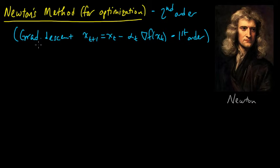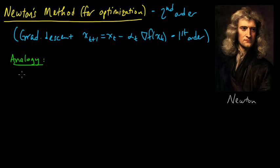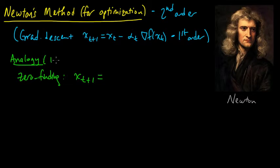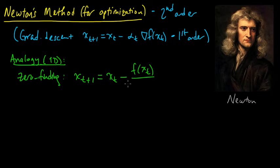You may be familiar with Newton's method, especially in the 1D case — not applying it to optimization, just for finding zeros. For zero-finding, the formula is: x_{t+1} = x_t minus f(x_t) divided by the derivative of f at x_t. You start out with some point x_0 and then you iterate with this formula.